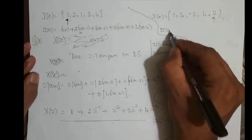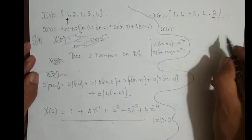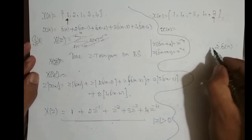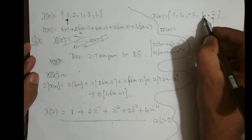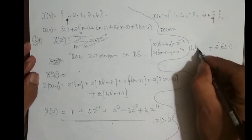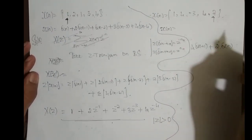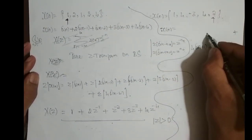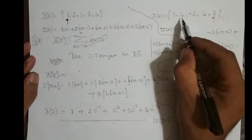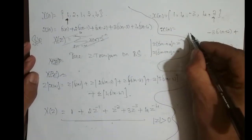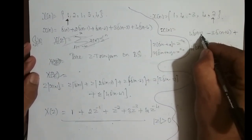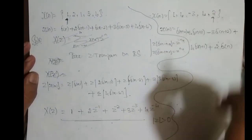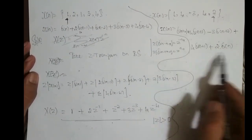If I write another sequence in terms of delta functions: at n equal to 0, it is delta(n) with amplitude 2. There is delta(n) shifted left one time with amplitude scaled by 4, so 4 times delta(n plus 1). Plus minus 3 times delta(n plus 2), shifted left two times. Plus 4 times delta(n plus 3), shifted left three times. Plus delta(n plus 4), shifted left four times.